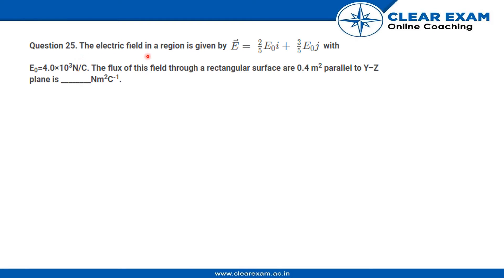The question says the electric field in a region is given by E vector equals 2/5 E₀ i cap plus 3/5 E₀ j cap, with E₀ equal to 4 × 10³ newtons per coulomb. The flux of this field through a rectangular surface of 0.4 meter square parallel to the YZ plane is: